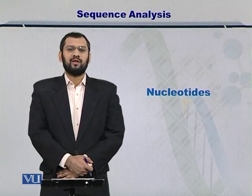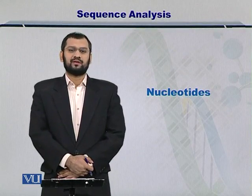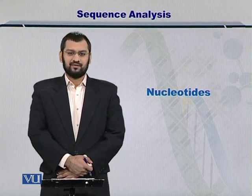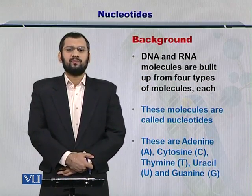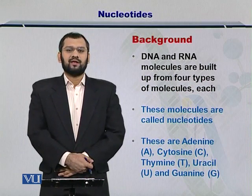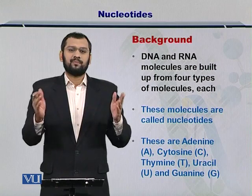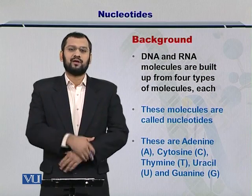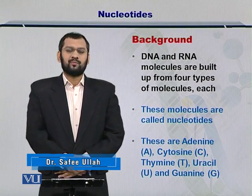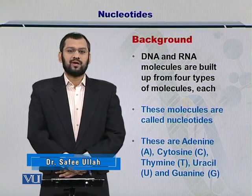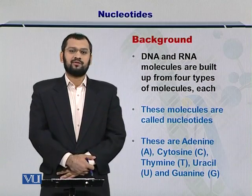Dear students, in this module we're going to discuss the various types of nucleotides that are there in the DNA and the RNAs. As you would know by now, the DNA is comprised of four different nucleotides. There are multiple copies of these nucleotides within a single DNA molecule. In case of the RNA, it is also comprised of four different nucleotides and an RNA molecule can have multiple copies of these nucleotides as well.